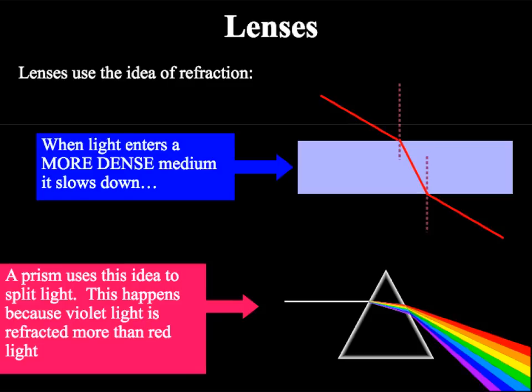However, from P1 and P2 you should be aware that when light enters a more dense medium it slows down. It also will bend towards the normal.